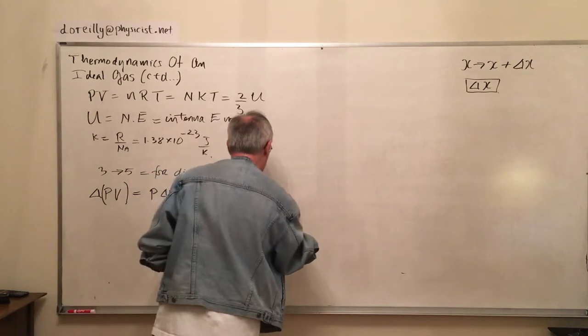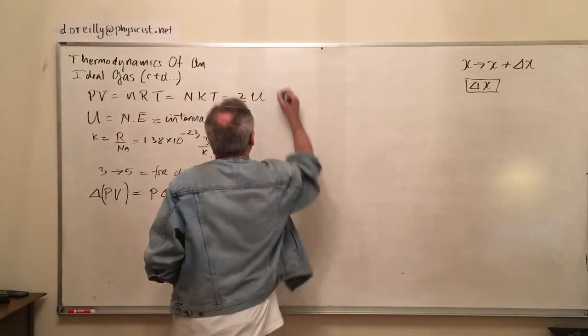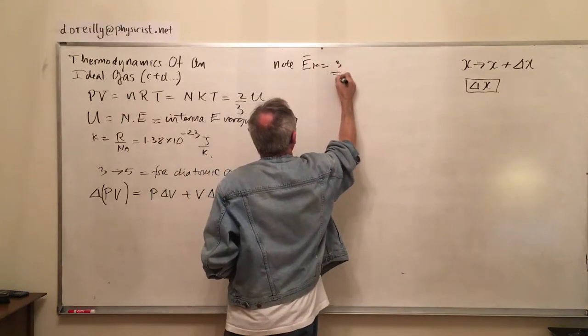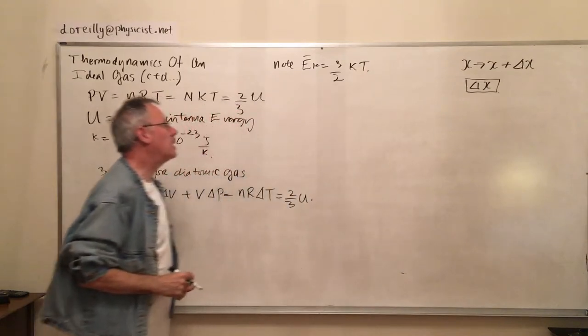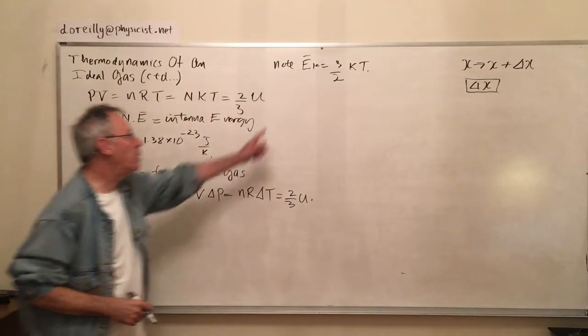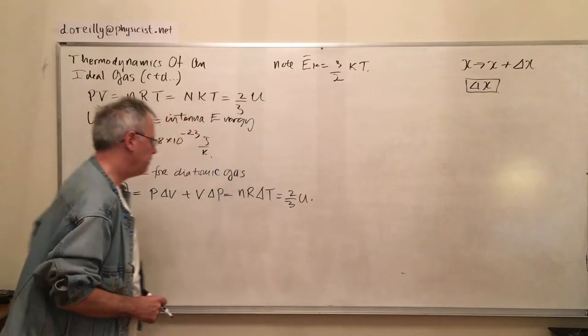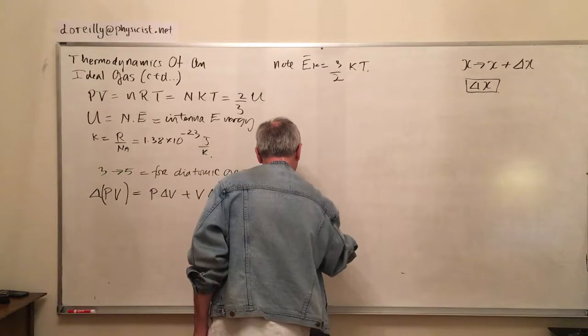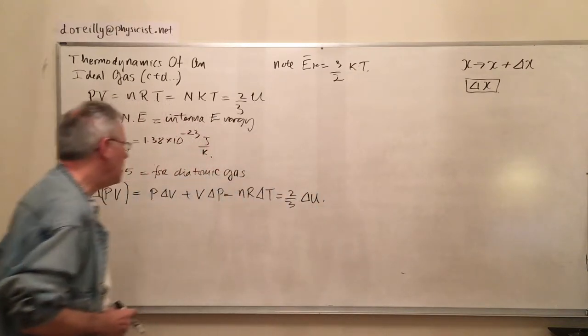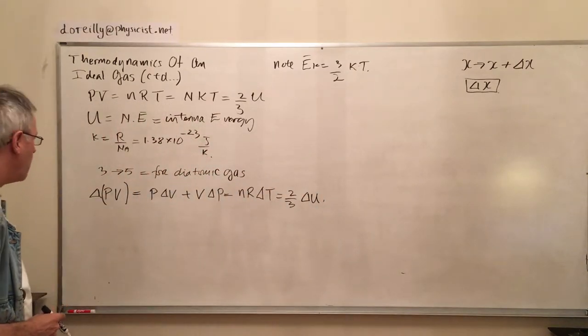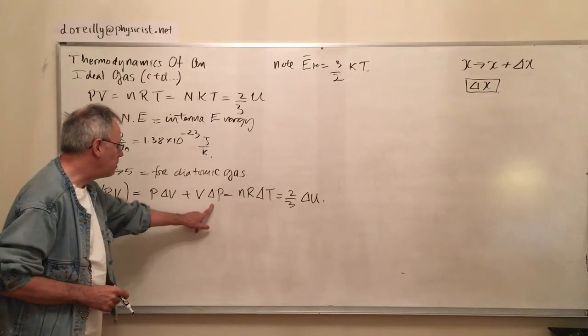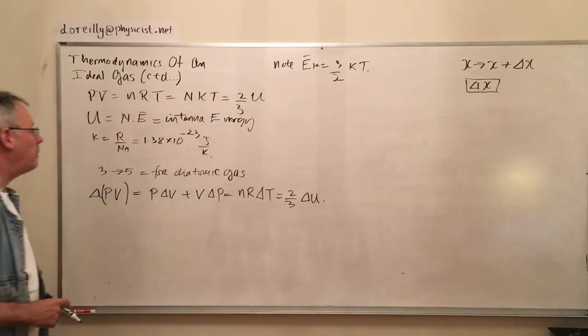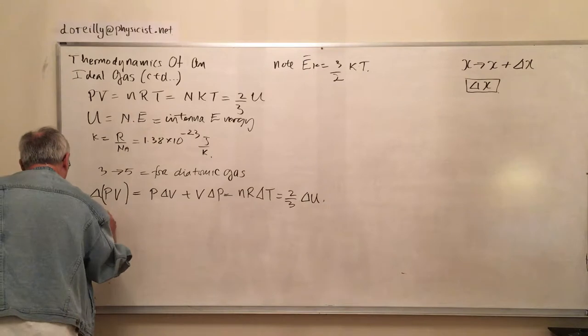The last time we derived an expression for the average kinetic energy per molecule which is 3/2 kT. Now delta U is what we should have here. When various different kinds of processes occur we can set delta V equals 0, delta P equals 0, or delta T equals 0 and talk about different thermodynamic processes. But first we will state the first law of thermodynamics.